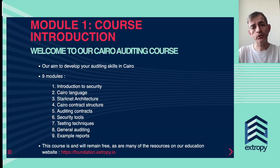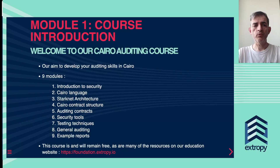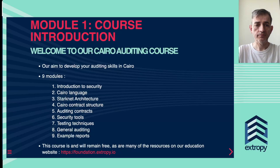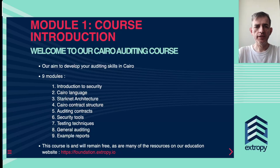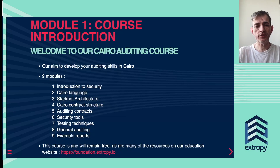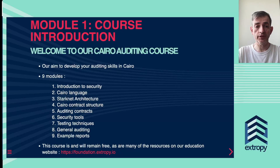In module two we take a look at the Cairo language, and then in module three we look at the architecture of StarkNet. In module four we look at the contract structure, and then in module five we start to go into detail about the types of vulnerabilities that you may find in Cairo contracts.